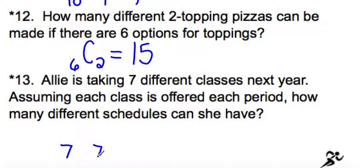It's her schedule. Like, order matters. Like, it matters if you have Algebra 2, second period, or if you have it fifth period, or whatever. So this is a permutation. And if you put that into your calculator, 7 permutation 7 is 5,040.